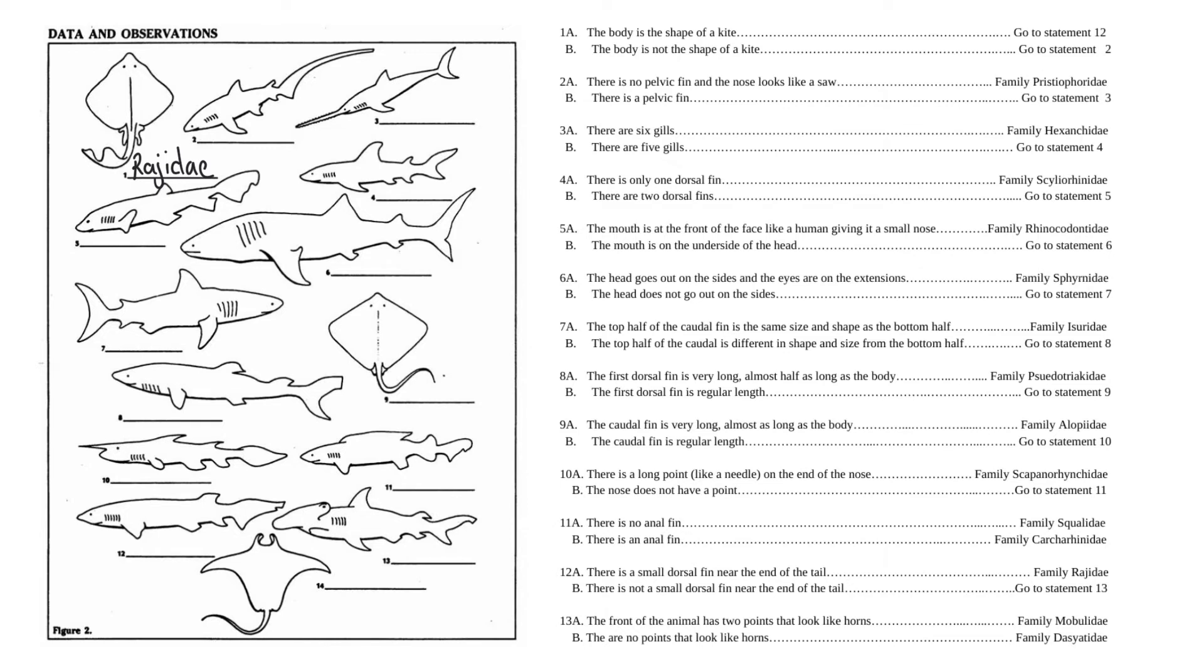The dorsal fin is very long, almost half the length of the body, or the dorsal fin is regular length. That is a regular length dorsal fin. So we go to statement 9. The caudal fin is very long, almost as long as the body, and that is true for this shark. So 9a is our true statement, so it's family Elopidae. So again, then we would write the family and move on to the next shark.